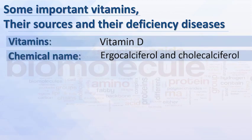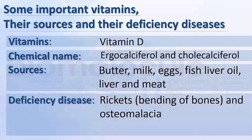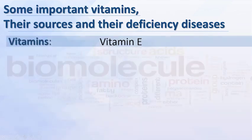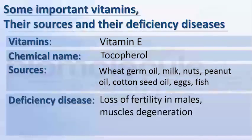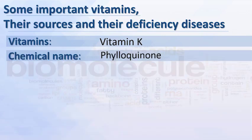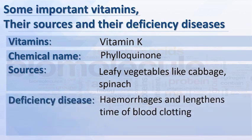Vitamin E: chemical name tocopherol; sources include wheat germ oil, milk, nuts, peanut oil, cottonseed oil, eggs, and fish. Deficiency causes loss of fertility in males and muscle degeneration. Vitamin K: chemical name phylloquinone; sources include leafy vegetables like cabbage and spinach. Deficiency causes hemorrhages and lengthened time of blood clotting.